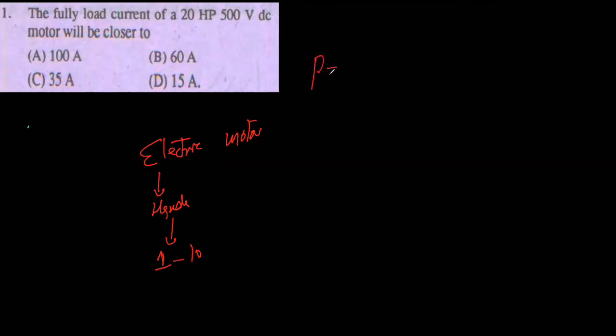Let's start from the first MCQ. The full load current of a 20 horsepower, 500 volt DC motor will be close to: 100 ampere, 60 ampere, 35 ampere, or 15 ampere. We have the well-known formula P = IV, and P is given as 20 horsepower.